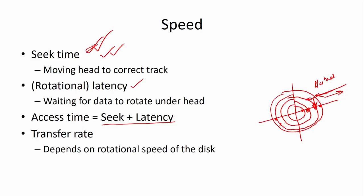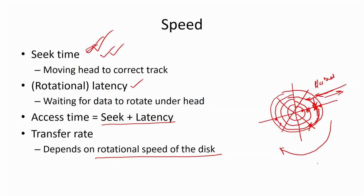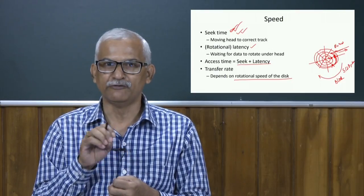After placing the appropriate track and sector below the head, we have to transfer the data. The disk rotates at constant angular velocity, so it takes some time to cover from the starting position of the sector to the ending position. During that time we transfer the information. This time is known as transfer time, and it depends on the rotational speed of the disk. If the disk rotates at a particular speed, it takes a particular amount of time to traverse one complete sector. This is the time required to transfer the whole block — for example, 512 bytes in a block.